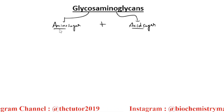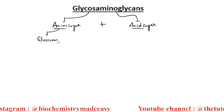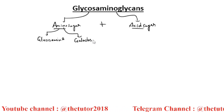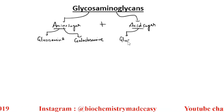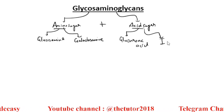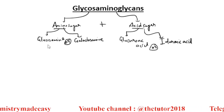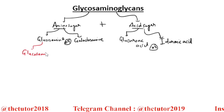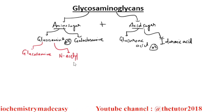The amino sugar is either glucosamine or galactosamine. The acid sugar is either glucuronic acid or iduronic acid. Glucosamine can be plain glucosamine or N-acetyl glucosamine.